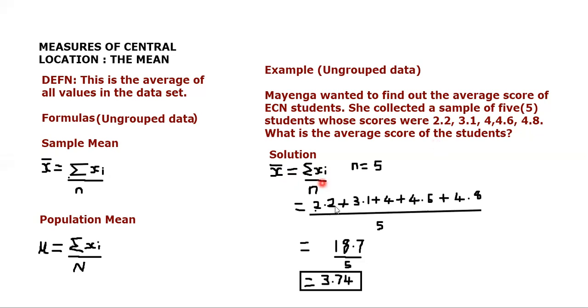Let's add all these independent observations from each student. We add them all together and divide by 5 according to the formula. If we add all the numbers in the numerator, we get 18.7. When we divide 18.7 by 5, our sample mean is going to be 3.74.